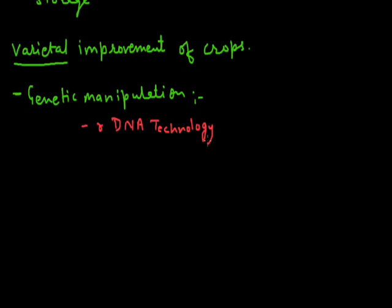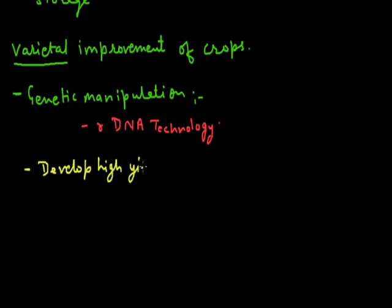Recombinant DNA technology, or rDNA technology, is used for the production of new desirable varieties. The main objectives of genetic manipulation include: first, to develop high yielding varieties — varieties which give us good production.